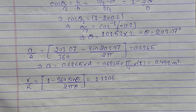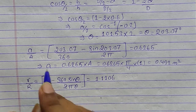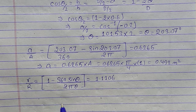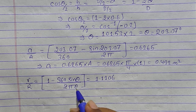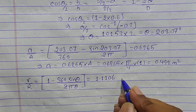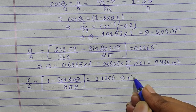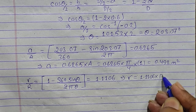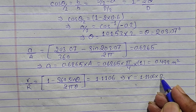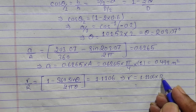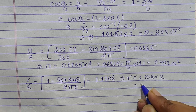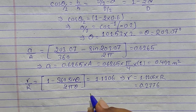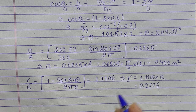If you have any difficulty understanding how these formulas were derived, check the previous video linked in the description. Now let's find the partial hydraulic mean depth: r = 1.1106 × R, where R is the full-flow hydraulic mean depth (R = D/4 = 0.25 m). Multiplying gives r = 0.2776 m.